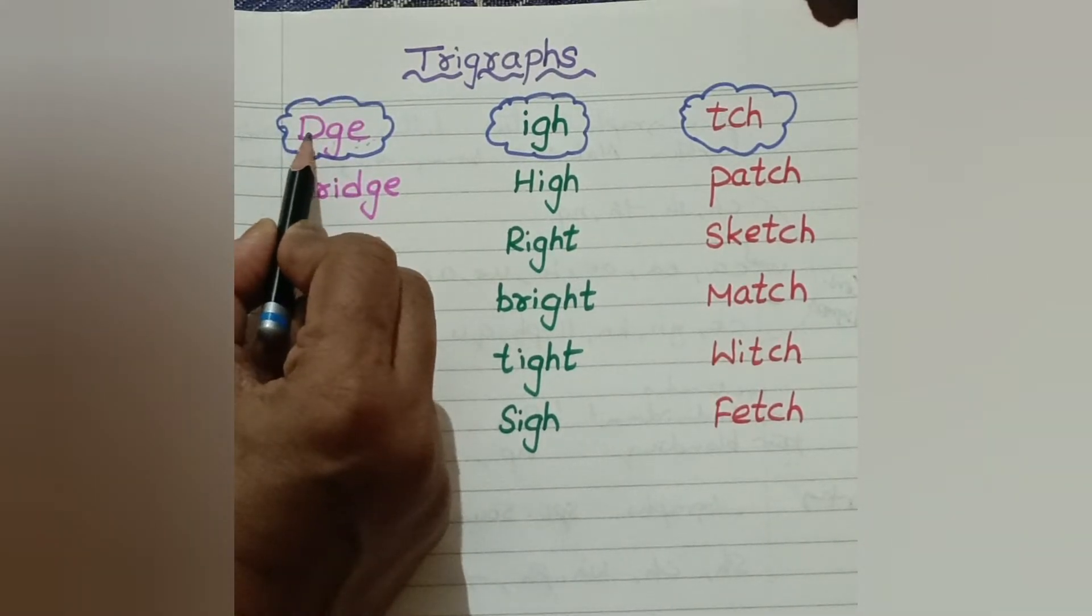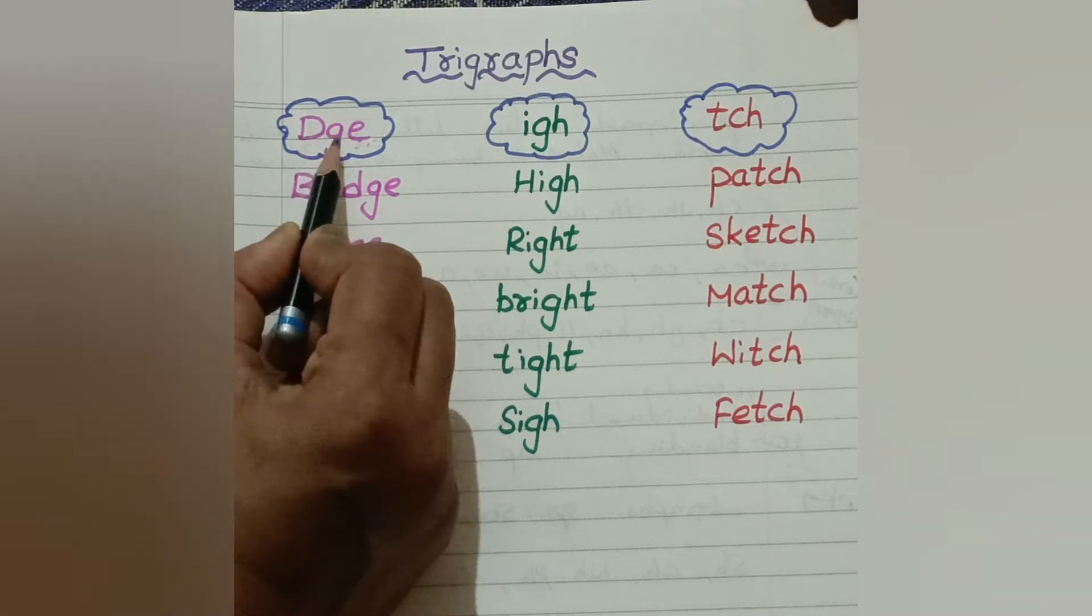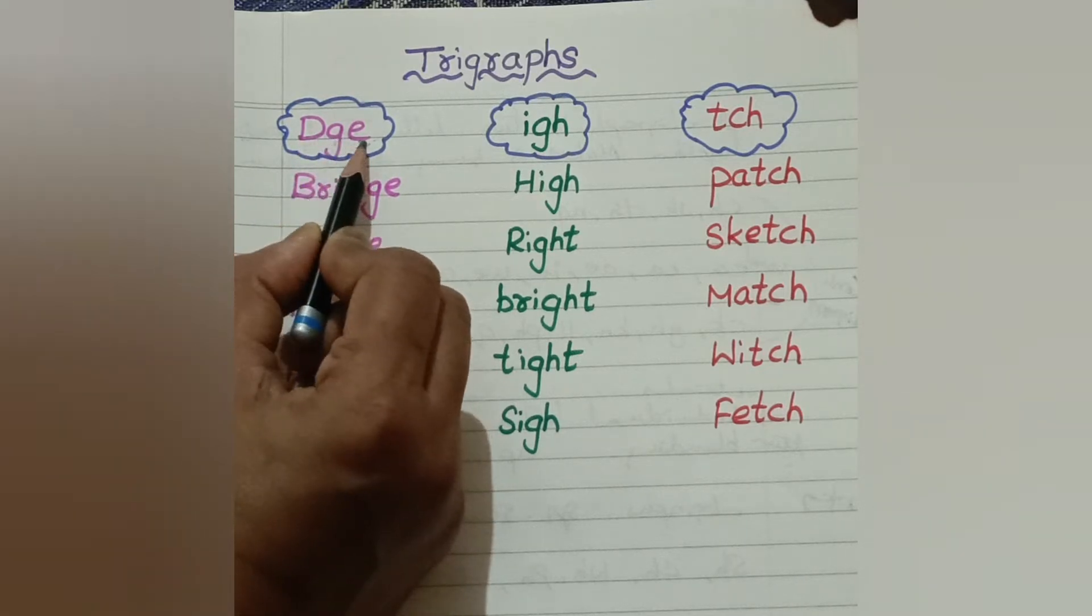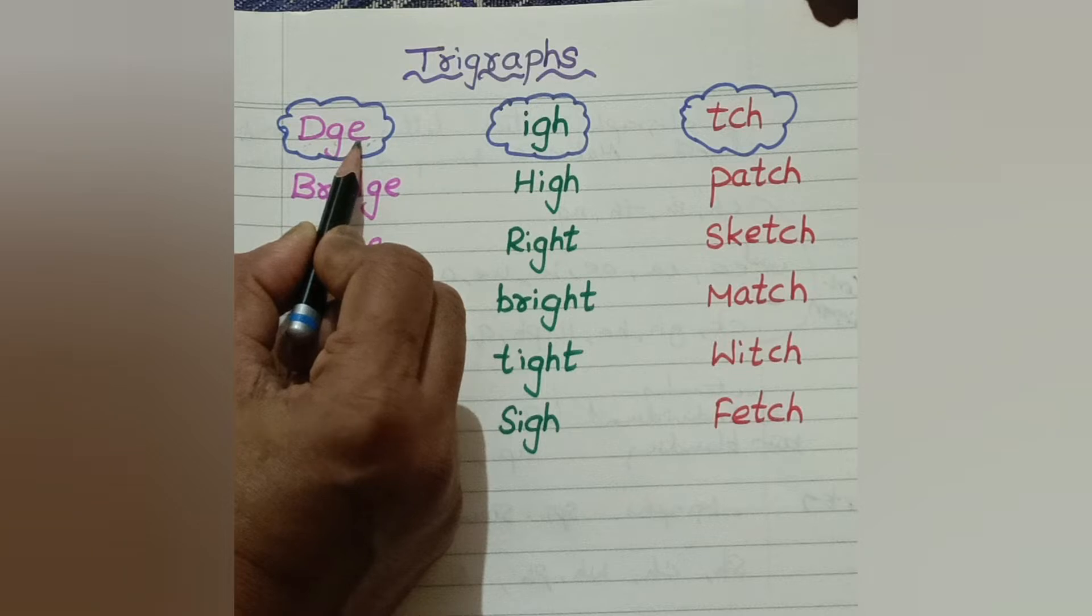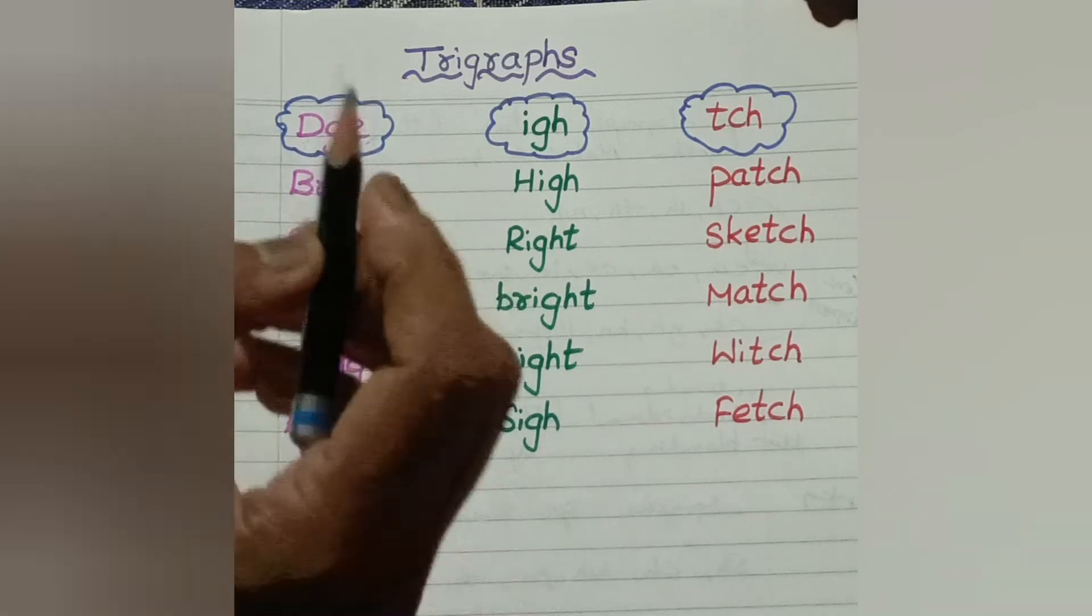These letters like D, G, E - D sound is D, G sound is G, E sound is A. They have their individual sounds, but when they join together, they make a single sound.